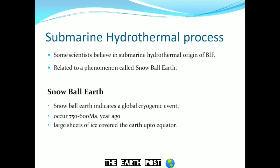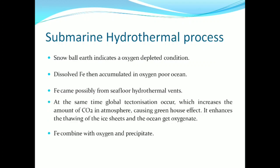The second hypothesis is the submarine hydrothermal process, which is related to a phenomenon called Snowball Earth. Snowball Earth indicates a global cryogenic event during 750 to 600 million years ago. During this time, large sheets of ice covered the Earth up to the equator, meaning about 90% of the Earth's land mass was covered by thick sheets of ice. As a result, the rate of photosynthesis decreased and an anoxic condition appeared, and dissolved ferrous ions accumulated in this oxygen-poor ocean, coming possibly from seafloor hydrothermal vents.